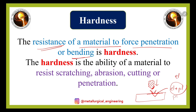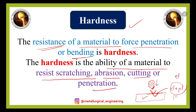When the material starts deforming, it tries to resist that deformation. This resistance can be quantitatively measured using hardness. Hardness is the resistance to permanent deformation in the form of penetration or bending. It is also the ability of a material to resist scratching, abrasion, cutting, or penetration — different kinds of permanent plastic deformation.